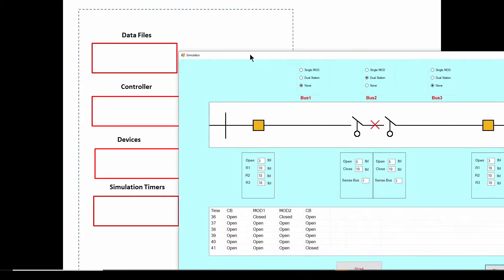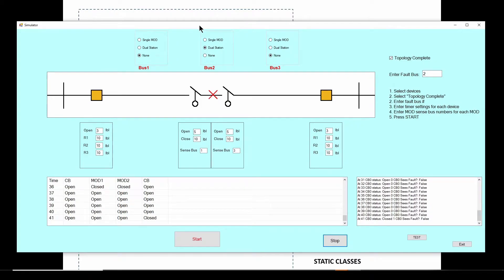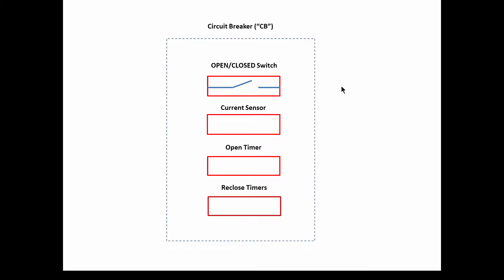In this video we're going to look at device modeling — the circuit breakers and also the automatic switches, which are similar but a little different. The circuit breaker is shown in this dashed box, and I've broken down the basic functionality into four parts. At its core it's basically an open/closed or on-off switch, just like the circuit breaker in your house. But the circuit breaker has additional logic so it can sense if there's a problem on the circuit.